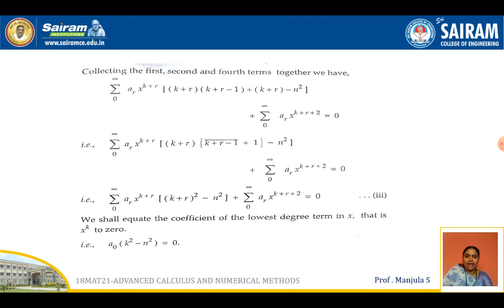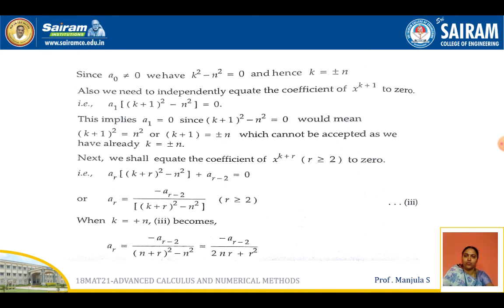Now we find the indicial equation by equating the coefficient of the lowest degree term x^k to 0. We get a0 (k² − n²) = 0. Since a0 ≠ 0, we equate k² − n² = 0, giving k = ±n. Next, equating the coefficient of x^(k+1) to 0, we get a1 [(k+1)² − n²] = 0. From this, the result is a1 = 0.